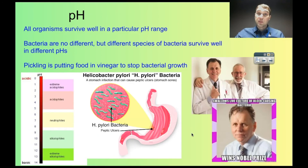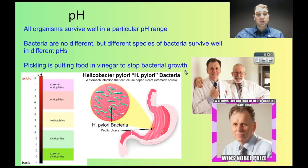Bacteria need specific pH conditions in order to survive. Some bacteria can survive well when it's really acidic, some like it around neutral, and some like it when it's basic. We use this in another food preservation technique called pickling — you put your food in vinegar and that stops the bacteria from growing. Because the pH of vinegar is so low, the bacteria that would be on the food can't survive anymore, so they stop growing.